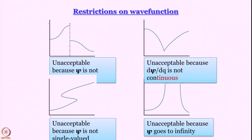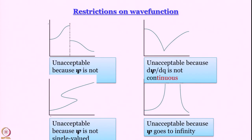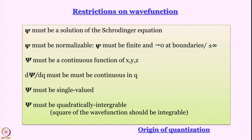What we see is that there are several restrictions on the wave function that arise out of Born interpretation, and these restrictions give us what are called boundary conditions. These boundary conditions bring in quantization, as we are going to see. All these conditions bring in restrictions, and these restrictions eventually bring about quantization. The origin of quantization lies in Born interpretation. Even though in the Schrodinger equation we do not see any quantum number, quantum numbers arise the moment we apply these boundary conditions. This comes out beautifully when we discuss a free particle and particle in a box, which is what we are going to take up next.